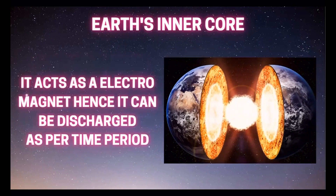Earth's inner core acts as an electromagnet, hence it can be discharged as per a time period. This is the property of any electromagnet — it has a certain time period of discharge.